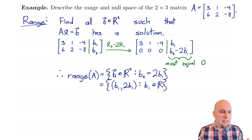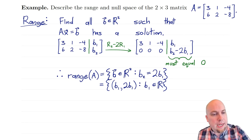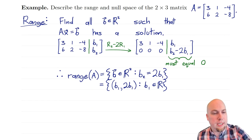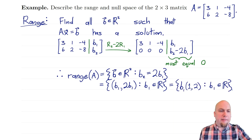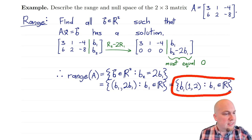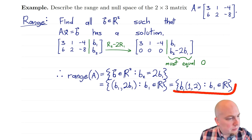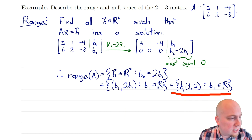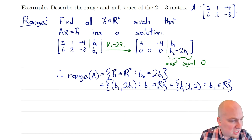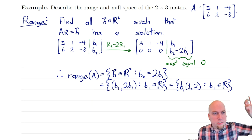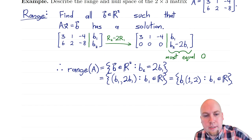So the range is all vectors b in R² such that b2 equals 2b1. We can write this as all vectors of the form (b1, 2b1) where b1 is an arbitrary real number, or factoring out b1, the range is the set of all multiples of the vector (1, 2). This makes it clear the range is a subspace — it's just a line through the origin in R².